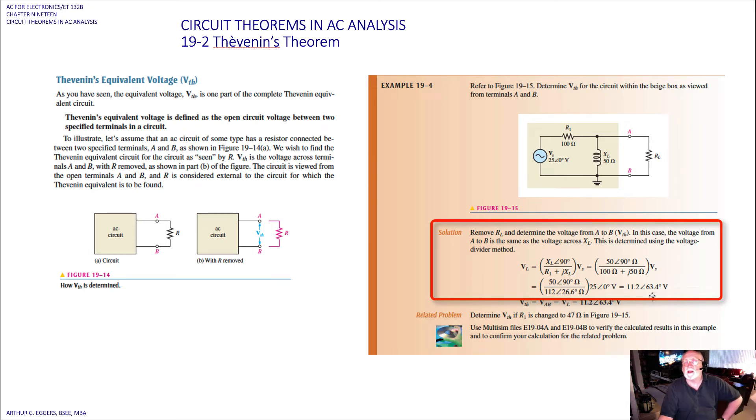So the Thevenin voltage then across looking in the ports V_AB, equal to the load across that resistor, gives us 11.2∠63.4° in volts. So that's a fairly simple analysis of a circuit, an RL circuit, that we take the output across the inductor.